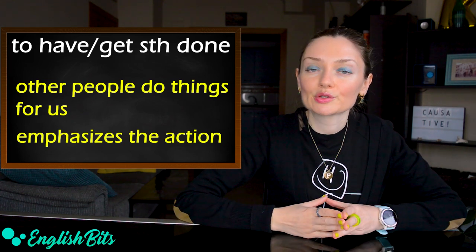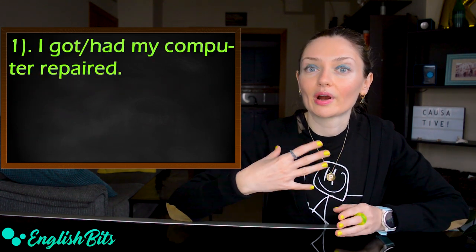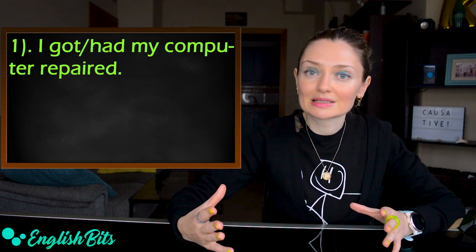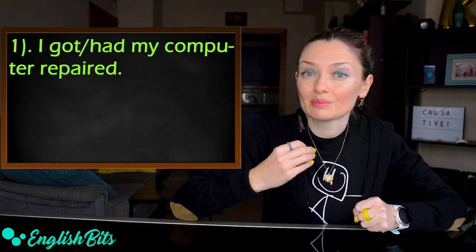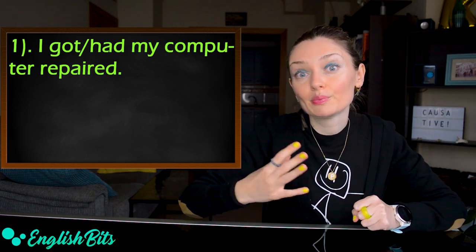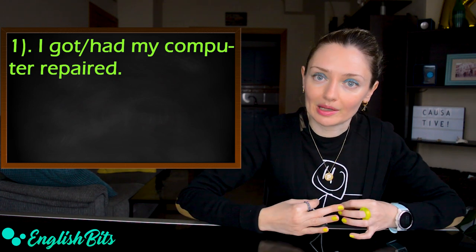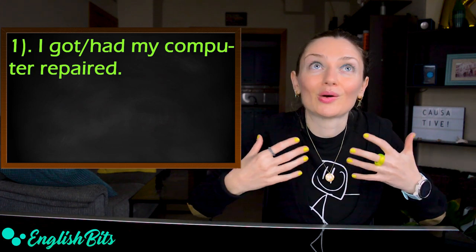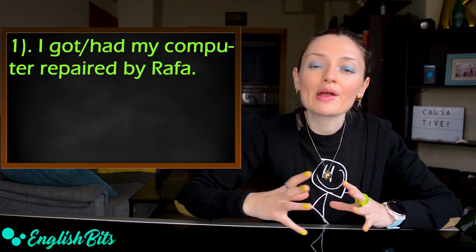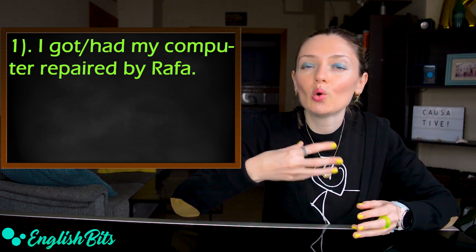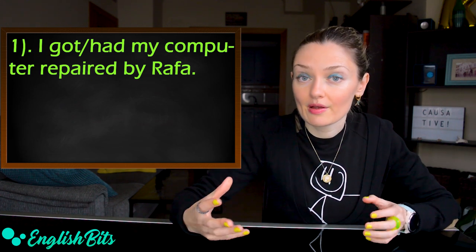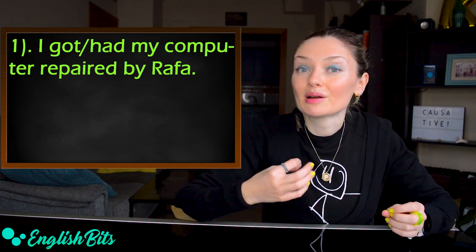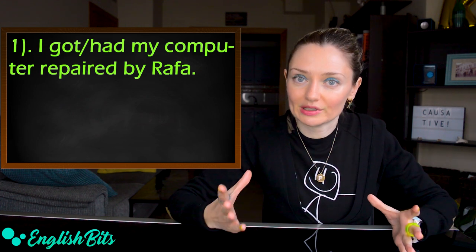Two examples. The first one: I got or I had my computer repaired. It means that I didn't repair my computer myself. It was another person who did it for me because I can't repair a computer. I don't know how. If you want, it's not necessary, but you could say who performed the action. For example, I had my computer repaired by Rafa. It's a kind of passive voice.